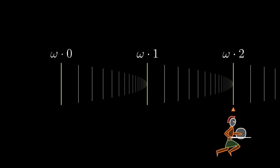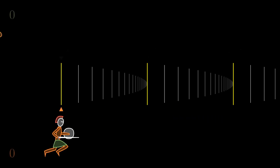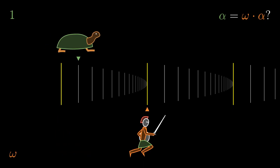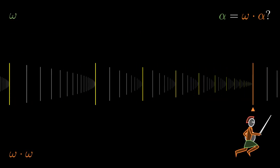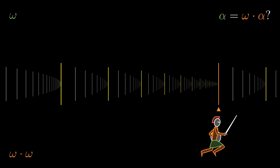Of course, Achilles gets further by his second step. But what if we summon the turtle against Achilles? Has the turtle a chance of catching him again? Is there a non-zero ordinal alpha equal to omega times alpha? Let's see. After one step, the turtle is at index 1 and Achilles is already at index omega. The turtle needs omega more steps to get to index omega, but Achilles is already away at index omega times omega by the time.